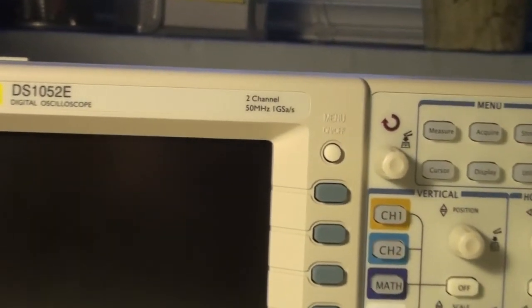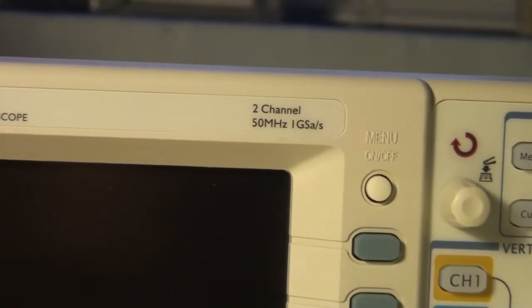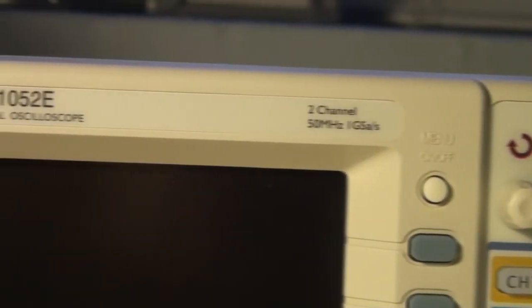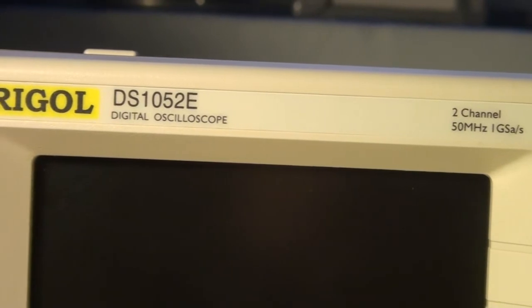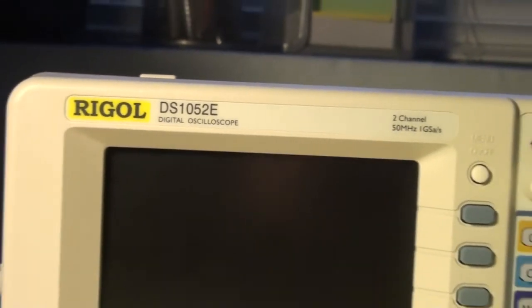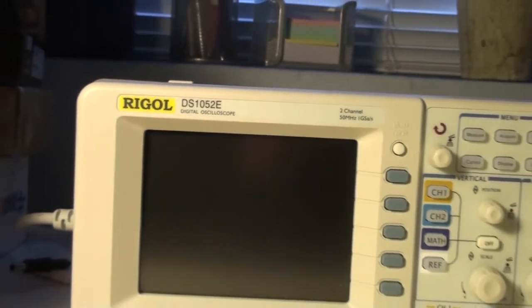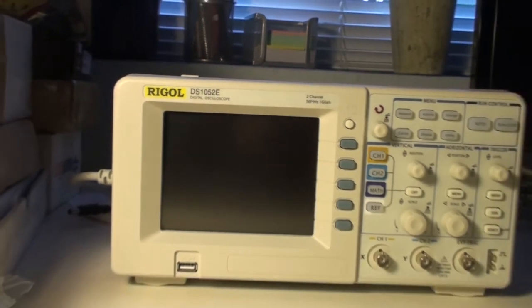But I've modified the firmware and installed the DS1102E firmware, which makes it a 100 MHz oscilloscope. So now I can measure signals up to 100 MHz, which is great.